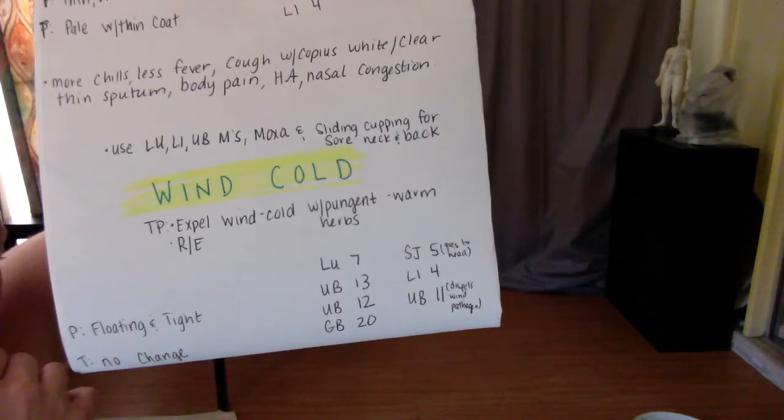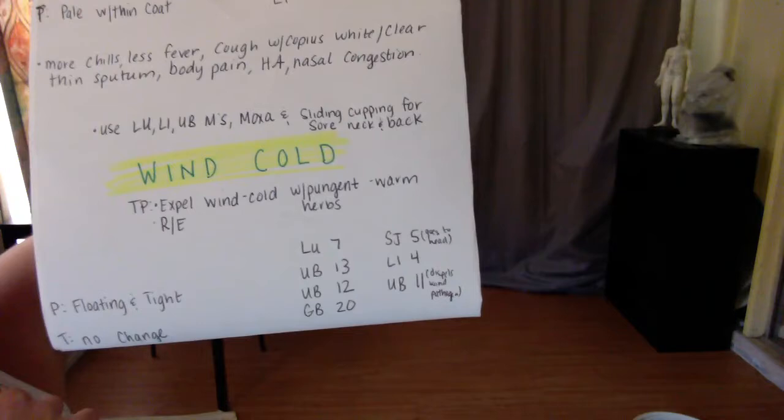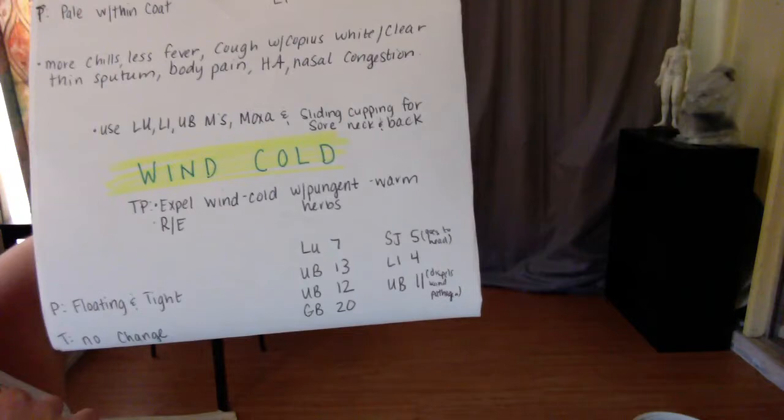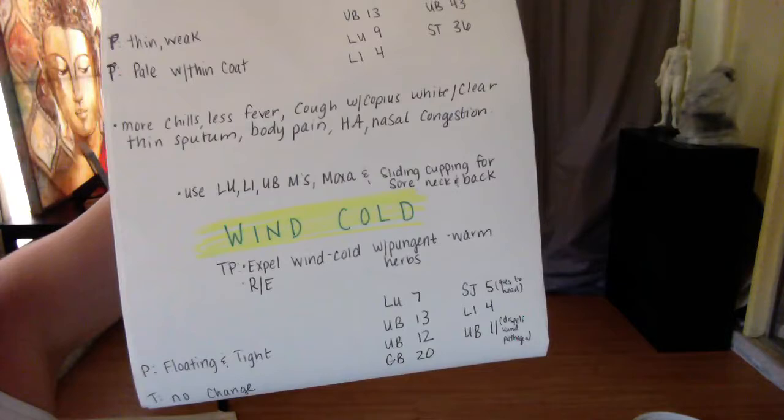Wind cold pulse is floating and tight, tongue has no change. Treatment principle: expel wind cold with pungent warm herbs and release exterior. Use lung, large intestine, and bladder meridians. Moxa and slide cupping for sore back and neck.